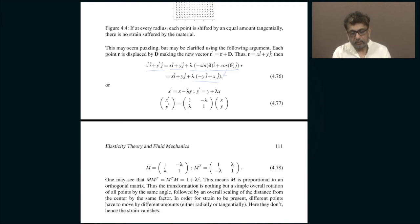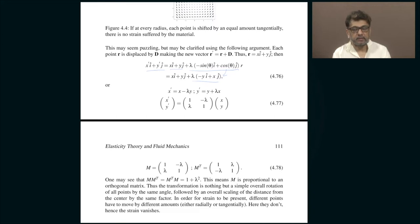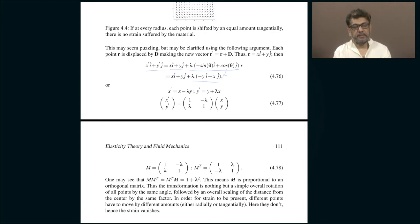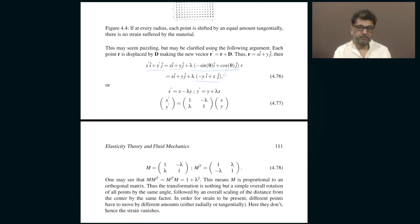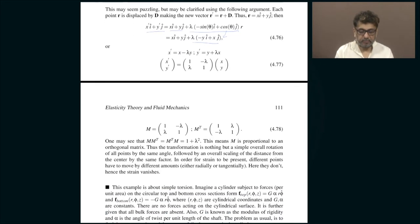This can be written as a matrix, and this is essentially proportional to an orthogonal matrix. What this means is that there is a rotation — there is an overall rotation by some angle, the distance from the centre is uniformly shifted in all directions, so there is a scaling, and there is a uniform rotation. As a result, there is no strain in the material. Strain happens when different parts of the material shift by different amounts, but here the whole material is shifting the same way in all locations, so there is no strain.